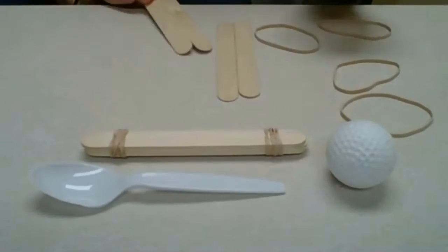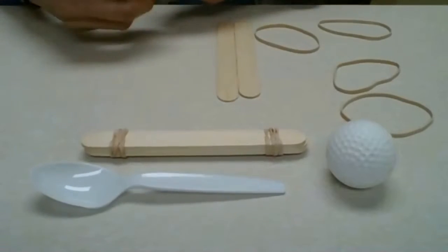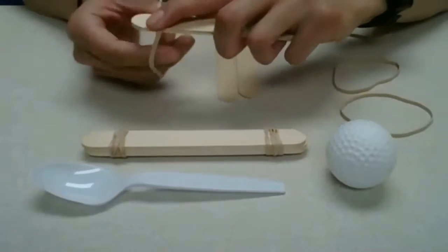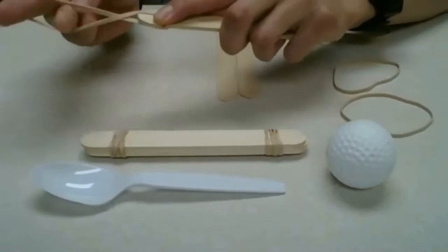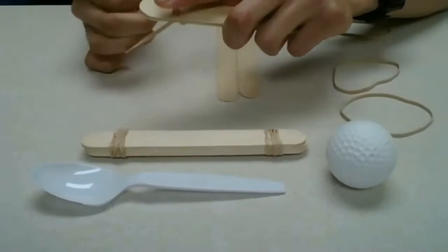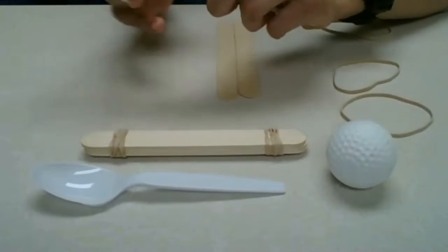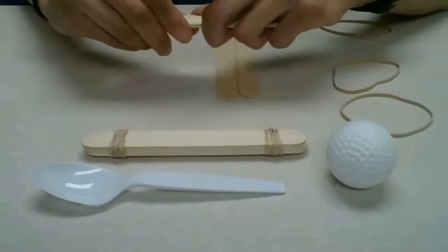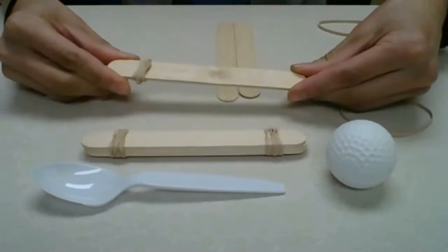Our next thing, we have to grab two popsicle sticks. For this, we're going to grab one rubber band and we're going to loop it around just one side. So we have just a few loops. Usually it's three or four loops for me. So there we go.